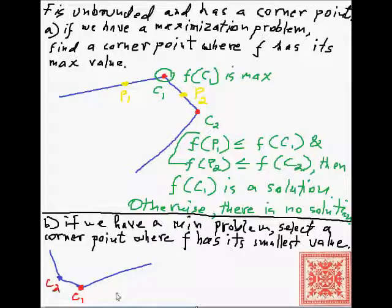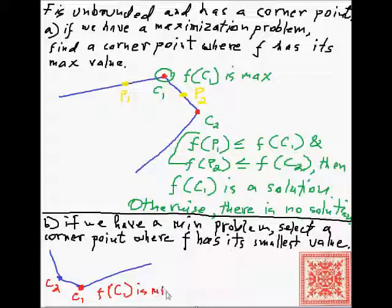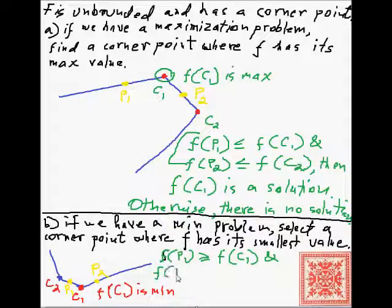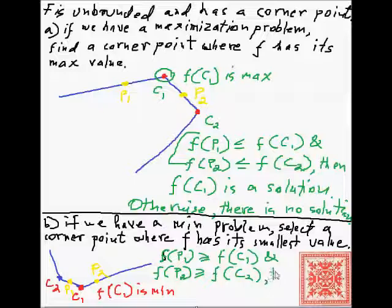Let's say we have two corner points and c1 is the corner point where the objective function attains its minimum — its smallest value. We choose an arbitrary point p1 on the first line and an arbitrary point p2 on the second line. So long as f of p1 is greater than or equal to f of c1, and f of p2 is also greater than or equal to f of c1, then c1 is the solution we're looking for.